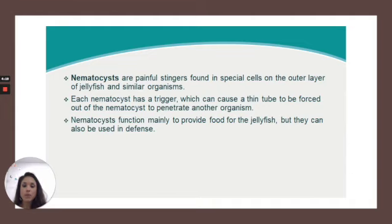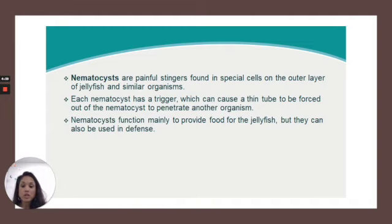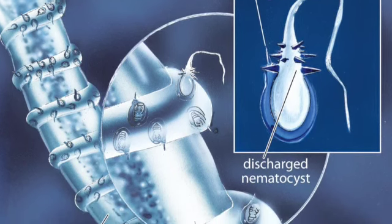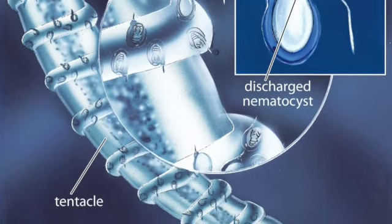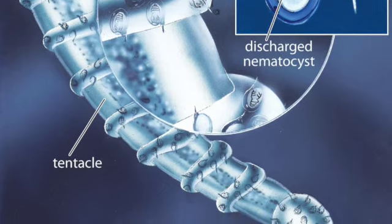Nematocysts are painful stingers found in special cells on the outer layer of the jellyfish and similar organisms. Each nematocyst has a trigger, which can cause a thin tube to be forced out of the nematocyst to penetrate other organisms. Nematocysts function mainly to provide food for the jellyfish, but they can also be used in defense. I'd love to hear your stories of getting stung by the various jellyfish around here on the island — you can share that with me next class.